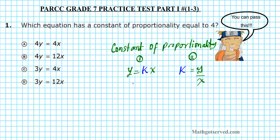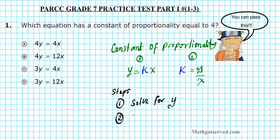There are two steps that you use. Step number 1: solve for y — get y by itself. Step 2: extract the coefficient of x. Whatever number you're multiplying x by, that's the coefficient, and that is your constant of proportionality. The coefficient of x is k, the constant of proportionality.